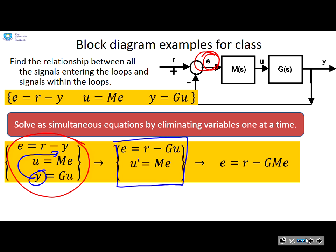And then what I'm going to do is take this variable u and plug it in there. And I end up with one expression now linking r and e. And I can solve that and get e equals 1 over 1 plus gm times r.